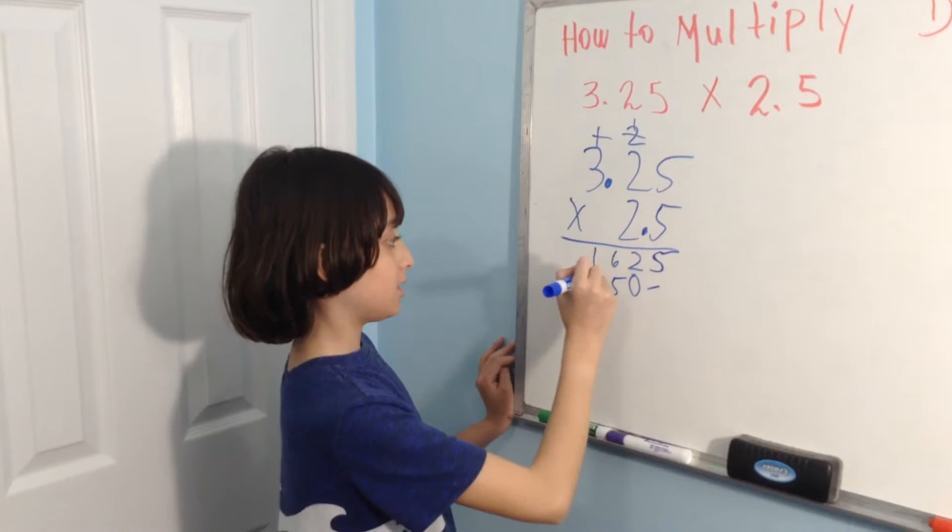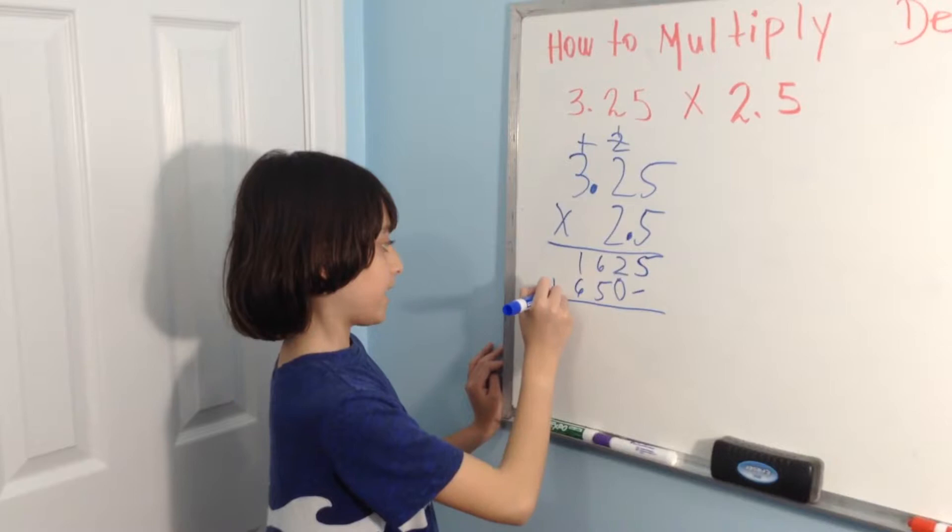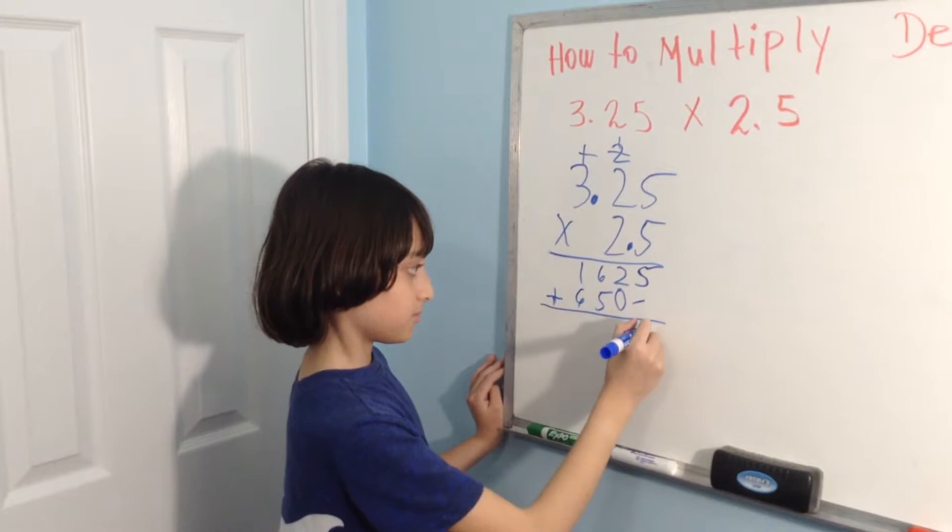Okay. Add it all up. 5. 2 plus 0 is 0... I mean 2.